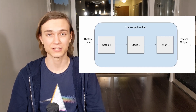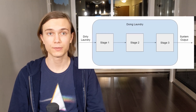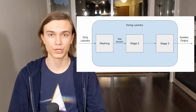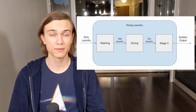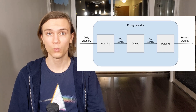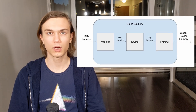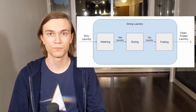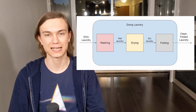Let's specialize the diagram to reflect this example. The system is going to be called 'doing laundry.' The system input is clearly dirty laundry. The first stage is washing, and the output of that stage and input of the next is wet laundry. The second stage is drying, producing dry laundry. The third stage is folding, which produces the system output of dry folded laundry. I'll color code each stage: washing is red, drying is yellow, and folding is gray.